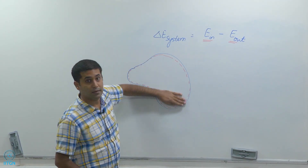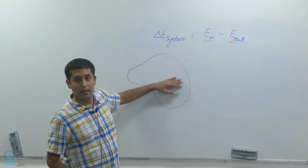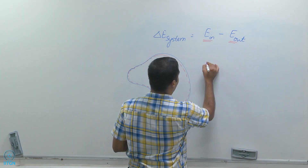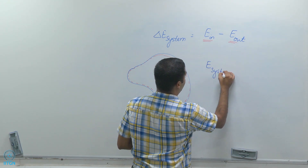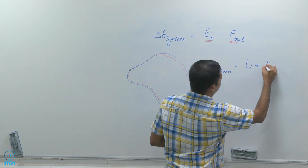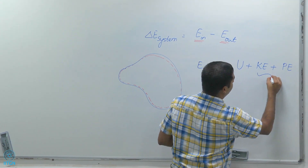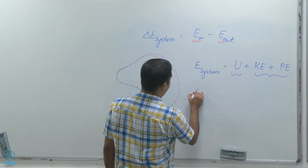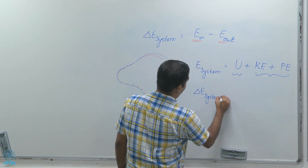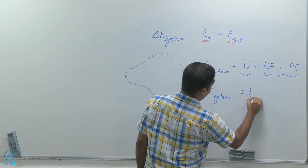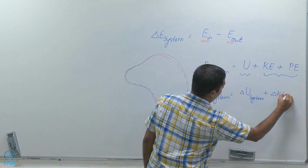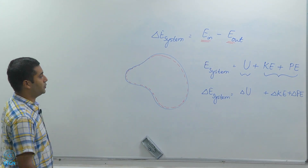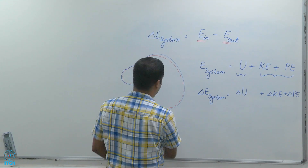Delta E system — I have to look at what is happening inside, where the energy is changing inside the system. We already saw that the energy of a system can have three different forms: microscopic energy consisting of kinetic and potential energies, and internal energy being the microscopic energy. Which means delta E of a system equals delta U plus delta KE plus delta PE.